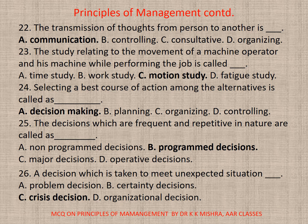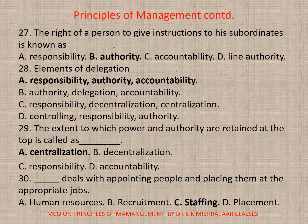Question 24: Selecting the best course of action among the alternatives is called — correct option is a) Decision making. Question 25: The decisions which are frequent and repetitive in nature are called — correct option is b) Programmed decisions. Question 26: A decision which is taken to meet an unexpected situation — correct option is c) Crisis decision.